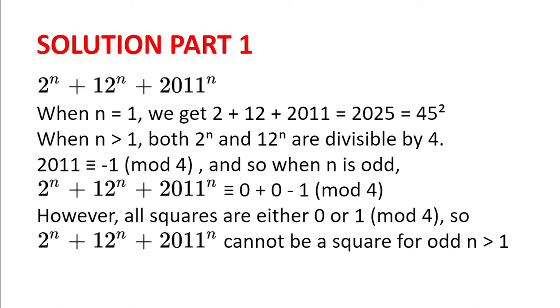When n is 1, we get 2 plus 12 plus 2011, which is 2025, or 45 squared, and so is a square.